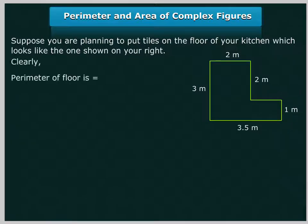Clearly, the perimeter of the floor is 2m plus 2m plus 1m plus 3.5m plus 3m equal to 11.5m.